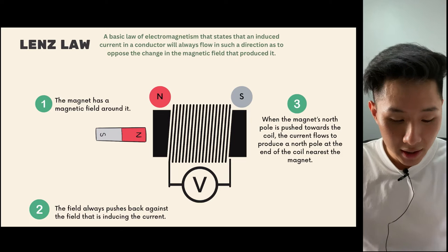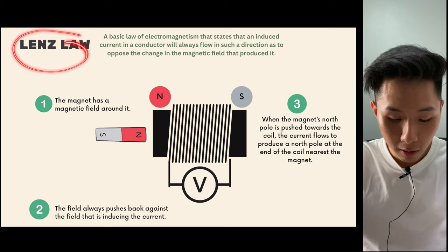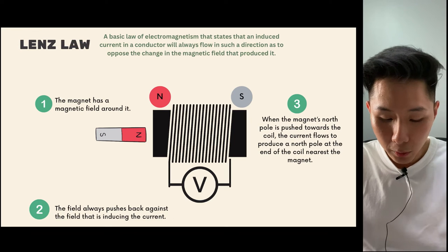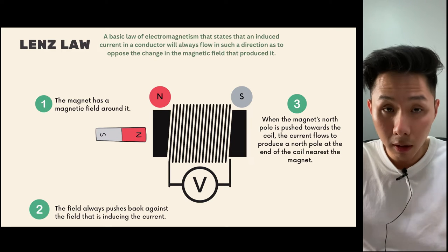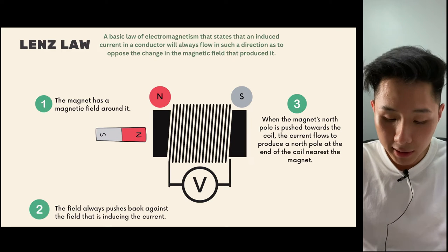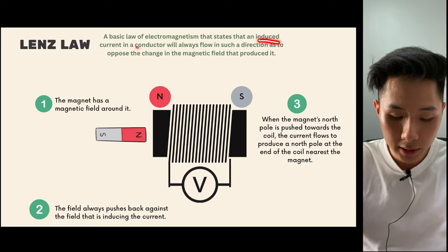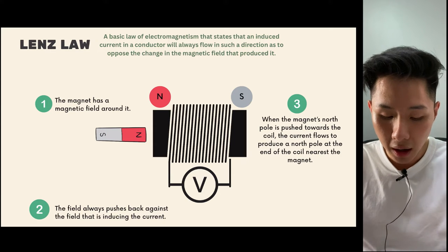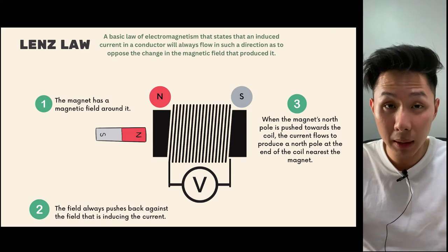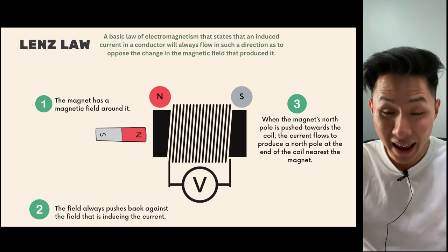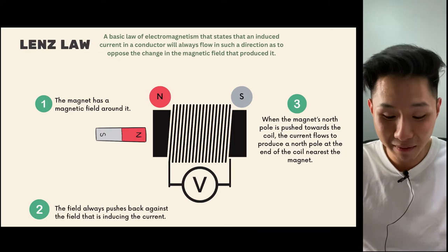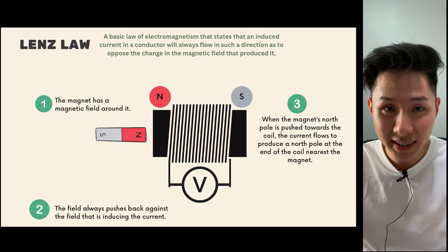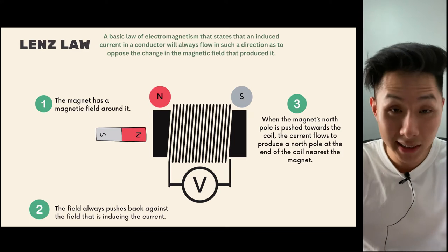Let's look at Lenz's law — a basic law of electromagnetism stating that an induced current in a conductor will always flow in the direction that opposes the change in the magnetic field that produces it. It's hard to understand from the definition alone, so let me explain it step by step.